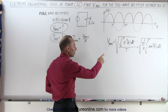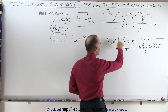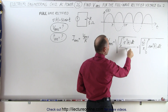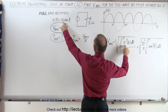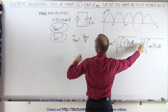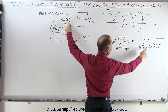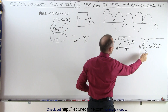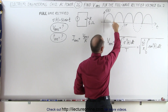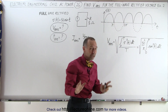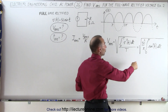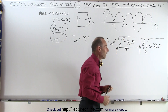The RMS voltage is equal to the square root of the integral from zero to the period of v² dt over T. V² is going to be 50 squared, which can come outside the radical, times sine squared of t dt, divided by the period. In this case the period is pi because it repeats every pi — so the limits are from zero to pi, not from zero to 2pi.